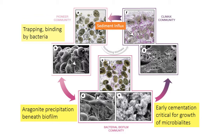Ultimately, the aragonite needles become microtized — they get welded together into a consistent thin cemented layer, visible in picture G. Then the process can repeat with deposition of a new sediment layer, and trapping and binding, and precipitation, and welding together, and so forth.